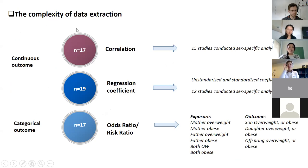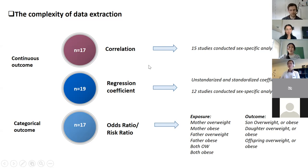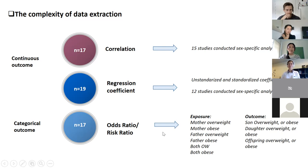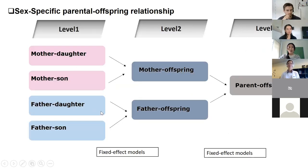The next step was data extraction, and it quickly got complicated. Offspring BMI could be reported as continuous or categorical. For continuous outcomes, different models were used — some studies reported correlation coefficients, some used regression models with regression coefficients. Some studies conducted sex-specific analyses, some only reported at the parent level. For regression there were also standardized and unstandardized coefficients, and for odds ratios there were different categories for both parents and offspring.